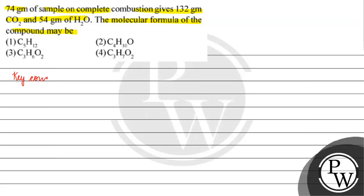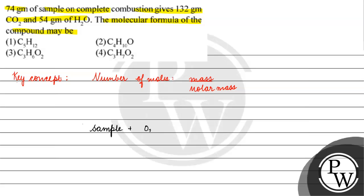The key concept for this question is: the number of moles is equal to mass divided by molar mass. When we have a question about the molecular formula, we find the mole ratio of the elements. Combustion means reaction with oxygen. So the mass of sample is 74 gram, carbon dioxide mass is 132 gram, and water mass is 54 gram.